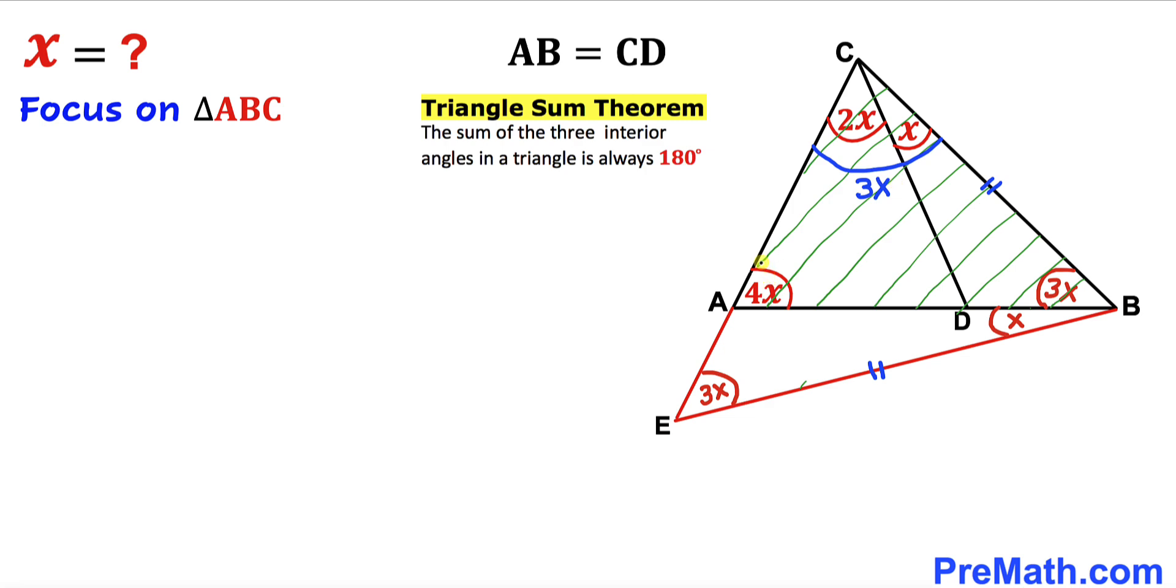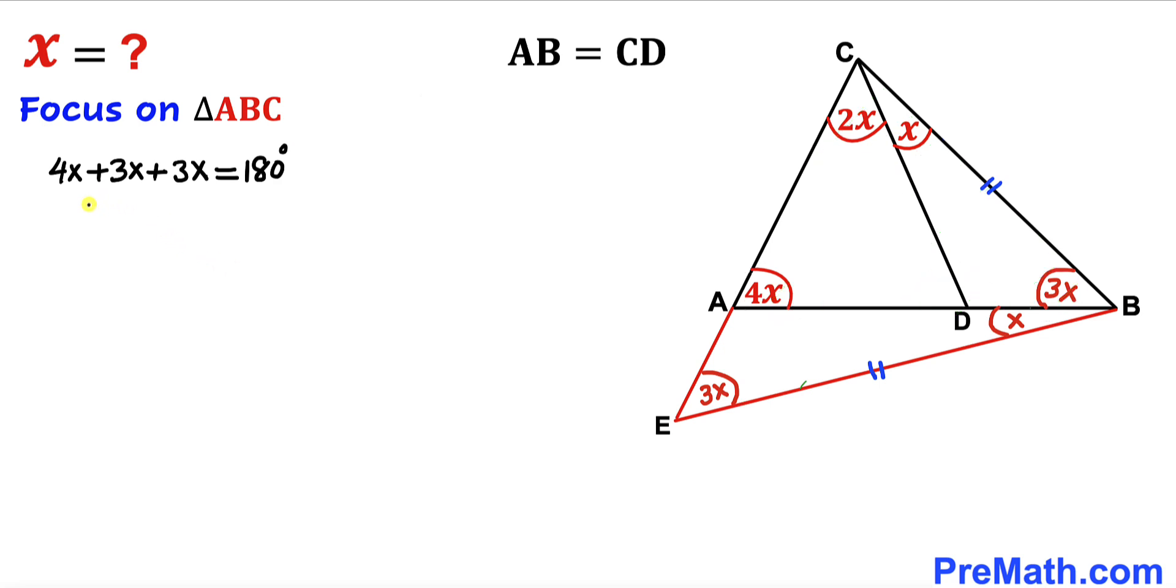Let's write down these three angles: 4X plus 3X plus 3X equals 180 degrees. If we add the left-hand side, we get 10X equals 180 degrees.